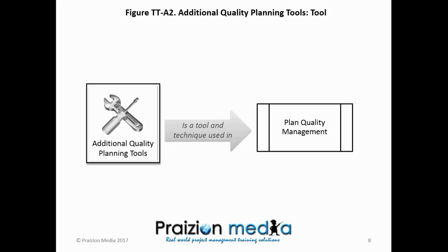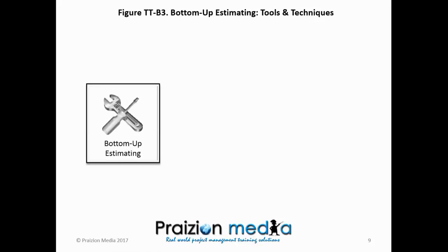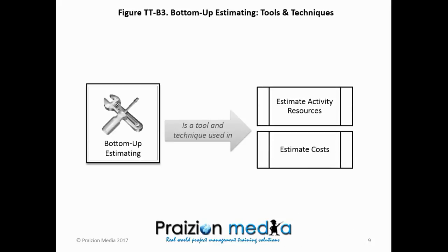We're going to skip a few now and go to an example where a tool and technique is used in multiple processes. Bottom-up estimating is a tool and technique used in which process or processes? The answers: Estimate Activity Resources and Estimate Costs.